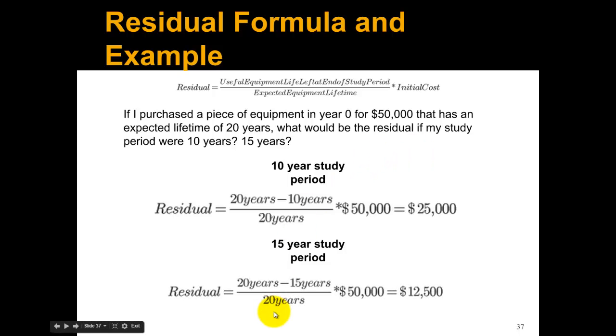If we look for a 15-year study period, we do the same exact thing except now instead of the 10 years we've used the equipment, we've used it for 15 years. So basically, we only have one quarter of the benefit left out of this equipment, or $12,500.